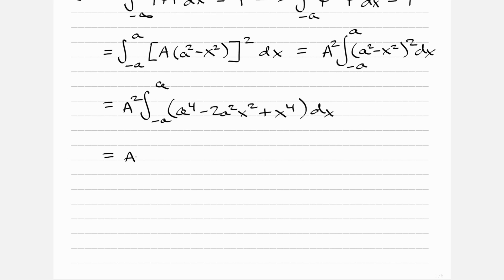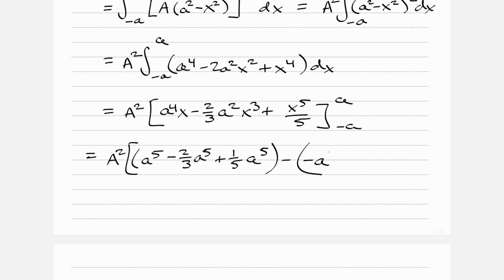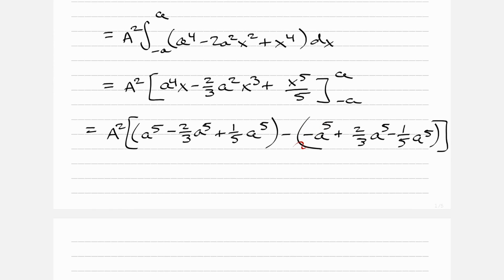This is a trivial integral. We get A² times [a⁴x minus (2/3)a²x³ plus x⁵/5] evaluated from minus a to a. Plugging in positive a gives a⁵ minus (2/3)a⁵ plus (1/5)a⁵. Plugging in minus a gives minus a⁵ plus (2/3)a⁵ minus (1/5)a⁵. Check your signs carefully — subtracting a negative flips those signs.